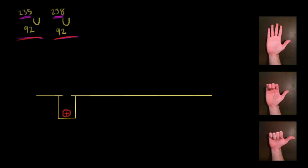The next step is to accelerate the ions over a potential difference delta V. There's going to be a whole lot of physics in this video, so hopefully you are comfortable with that. We accelerate the ions over a potential difference, and that means we're going to get a final velocity V of those ions. Let's see how to calculate that final velocity.